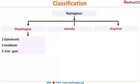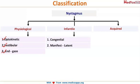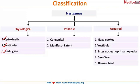Classification of nystagmus: it can be physiological, infantile, or acquired. Physiological is of three types: optokinetic, vestibular, and end-gaze nystagmus. Infantile is classified into congenital or latent (manifest) nystagmus. Acquired has five types: gaze-evoked, vestibular, internuclear ophthalmoplegia, seesaw nystagmus, and downbeat nystagmus.